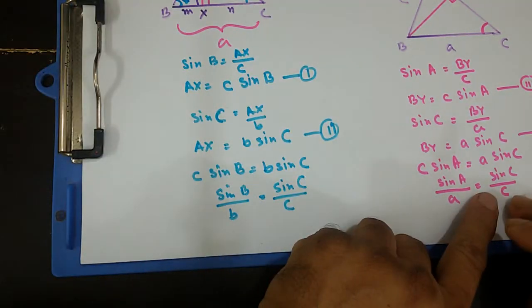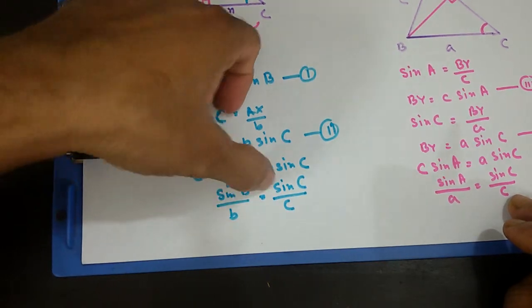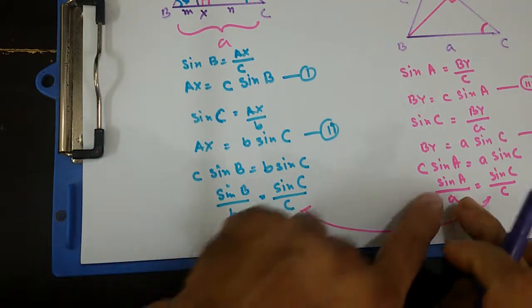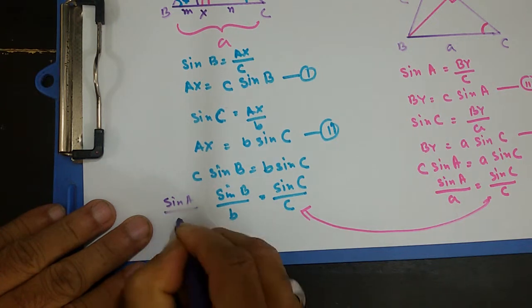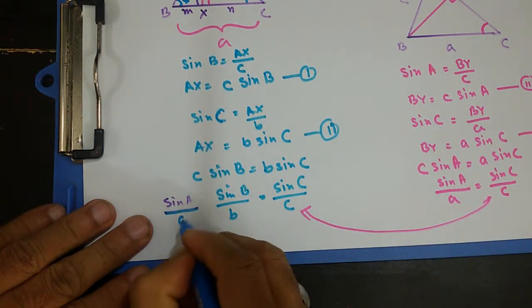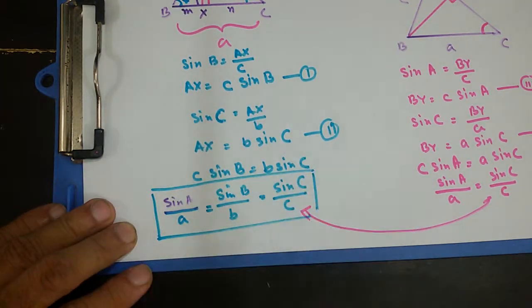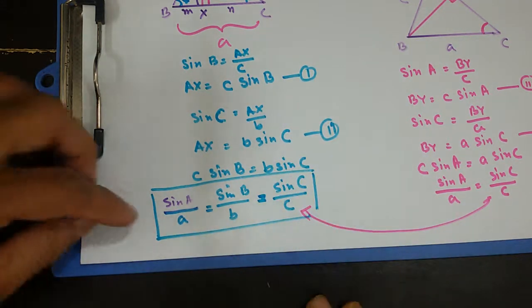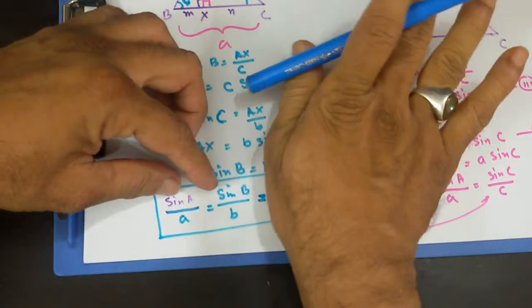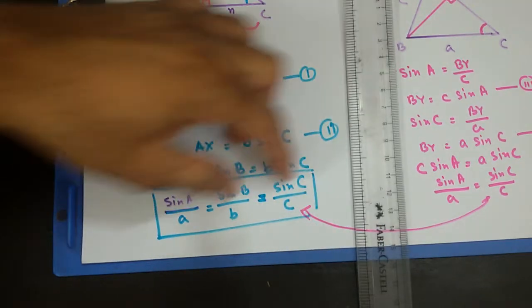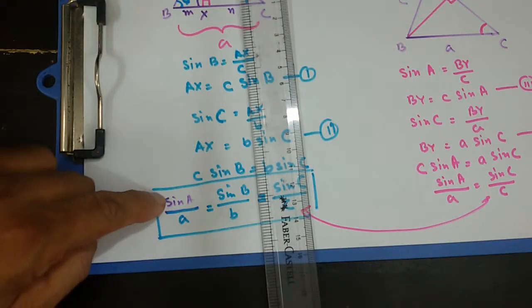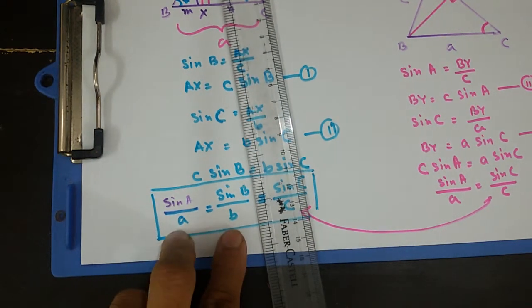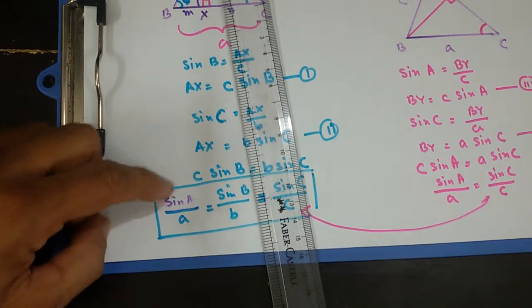Now, sine A over a equals sine C over c, and sine B over b equals sine C over c. These two share a common term, so we can combine them. This gives us sine A over a equals sine B over b equals sine C over c. And this is my sine rule. Since there are double equal signs, if I know two angles and one side, I can find another side. Or if I have two sides and one angle, I can find another angle.